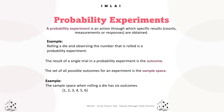Similarly, let's take another example: flipping a coin. When you flip a coin, there are two possible outcomes — heads or tails. Each outcome is equally likely, so the probability of getting heads is one-half and the probability of getting tails is also one-half.